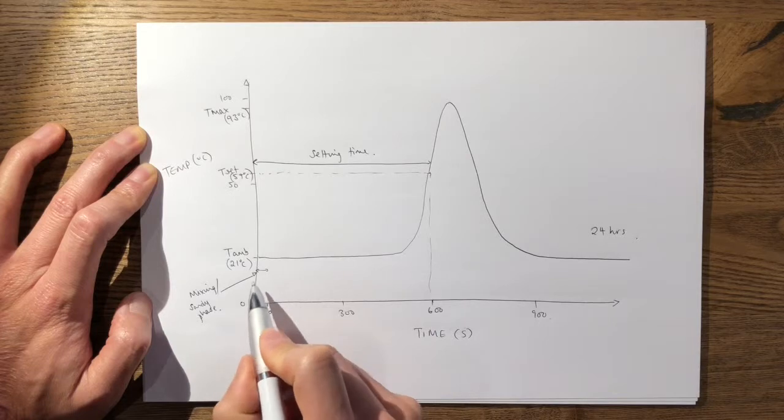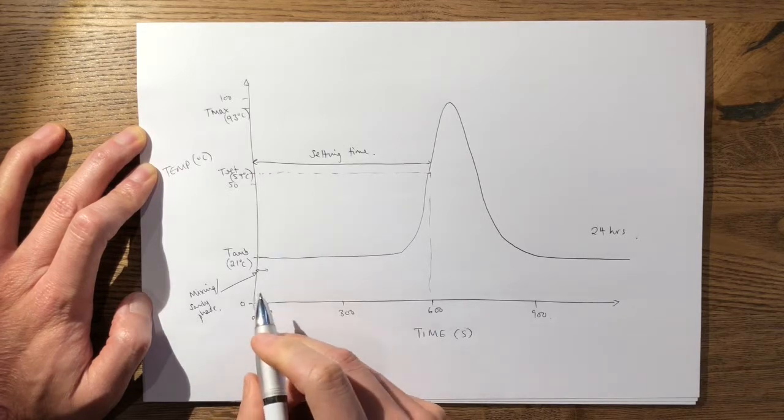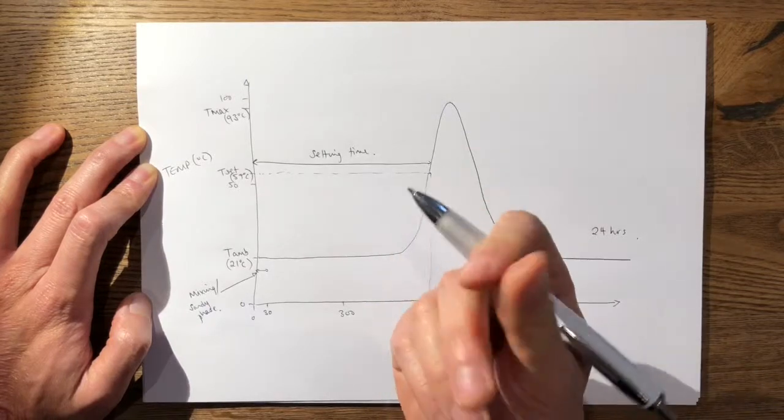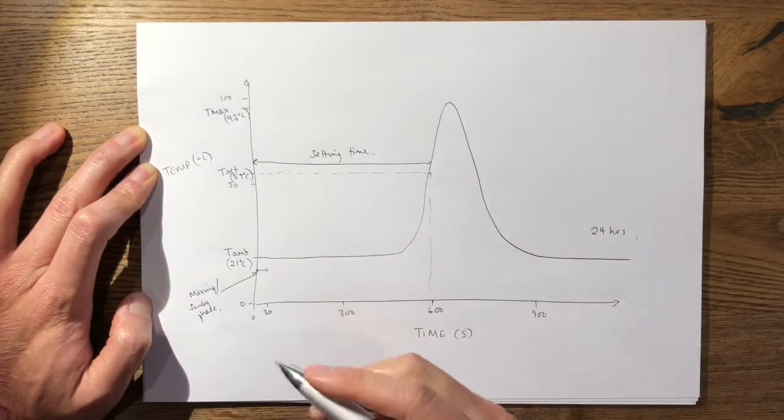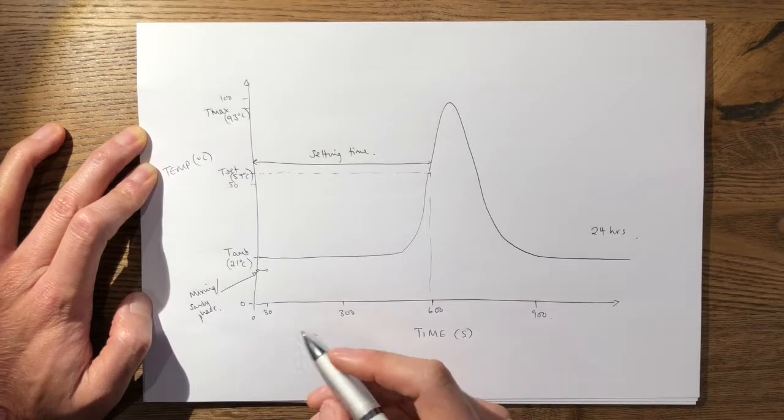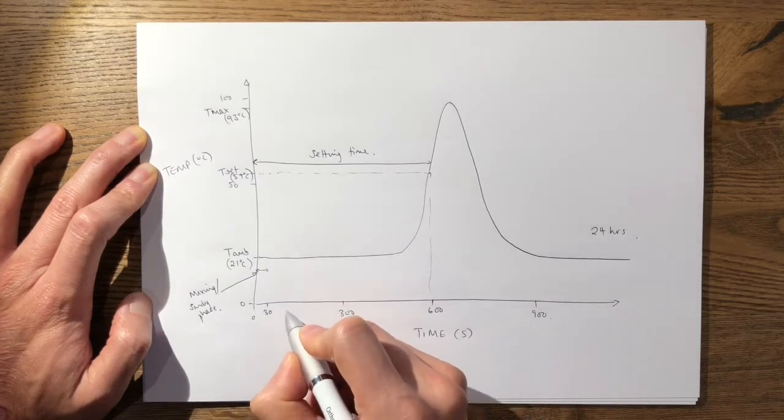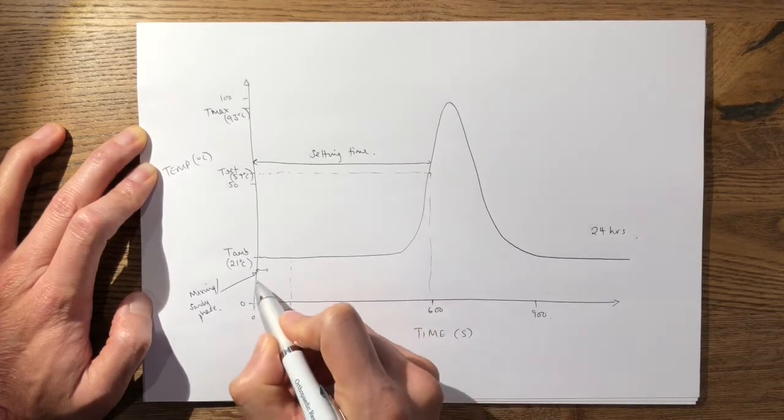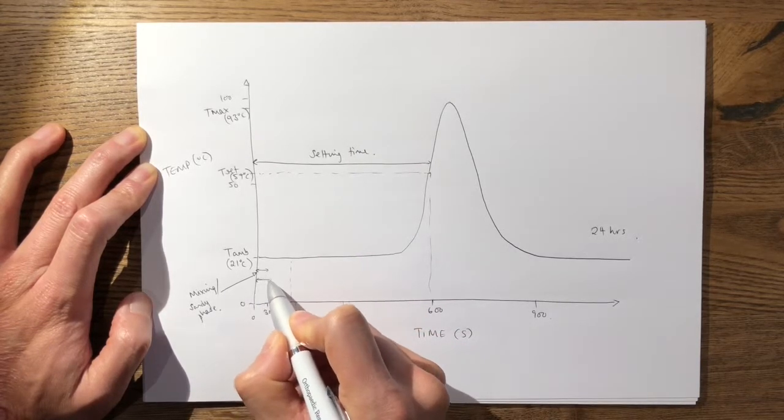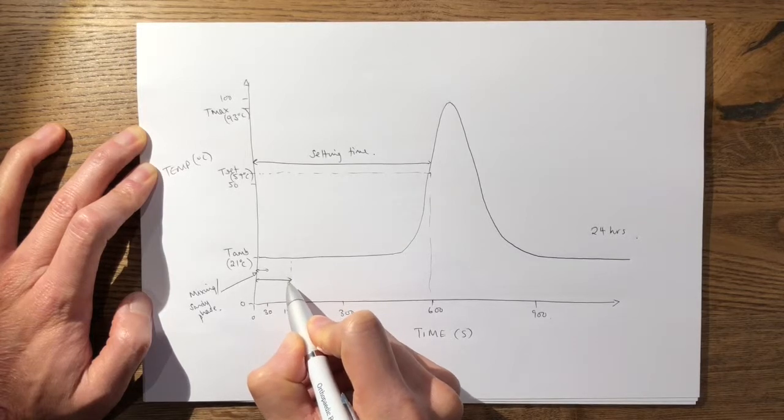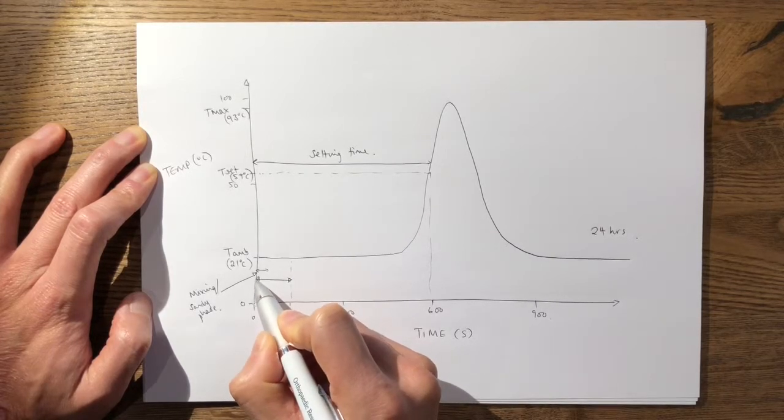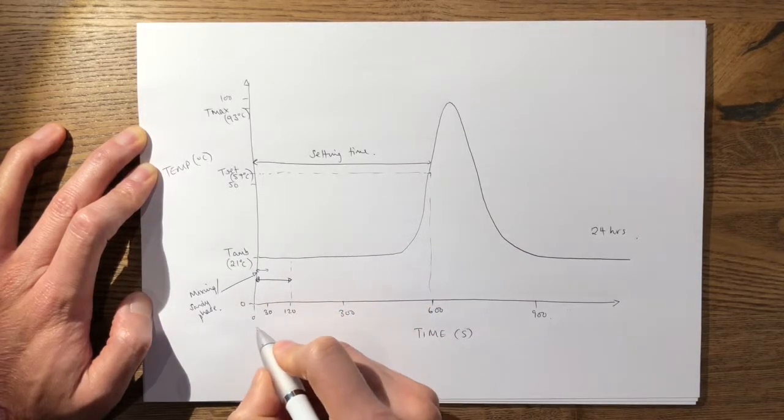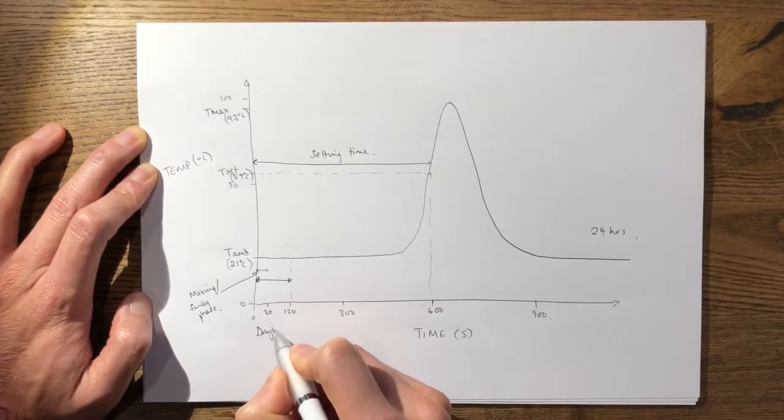From zero all the way to the time at which the cement stops sticking to a dry surgical glove, that's called the dough time or the doughy phase, and that typically lasts about two minutes or so, 120 seconds. That's the time when your scrub nurse starts to mix all the way to when it stops sticking to a surgical glove. That is known as the doughy phase.